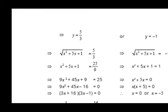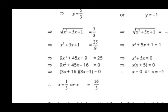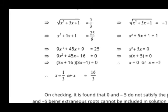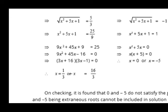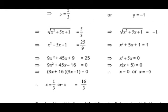For y = 5/3, we put the value of y and square both sides. In the denominator we have 9, so we multiply by 9, then simplify the resulting quadratic equation and factorize it. We get the values of x as 1/3 and 16/3.